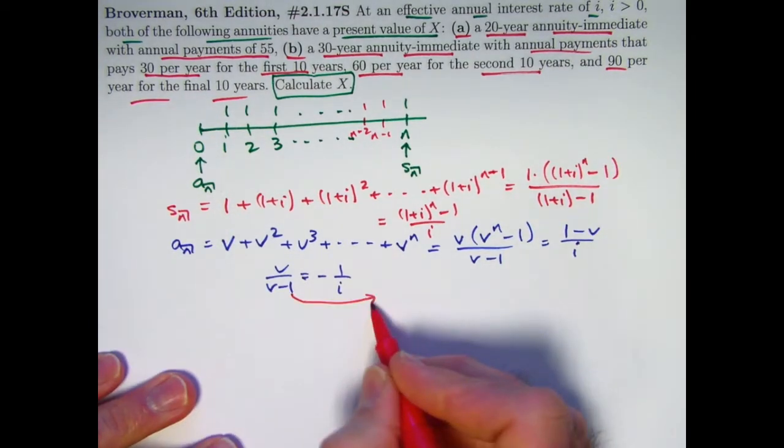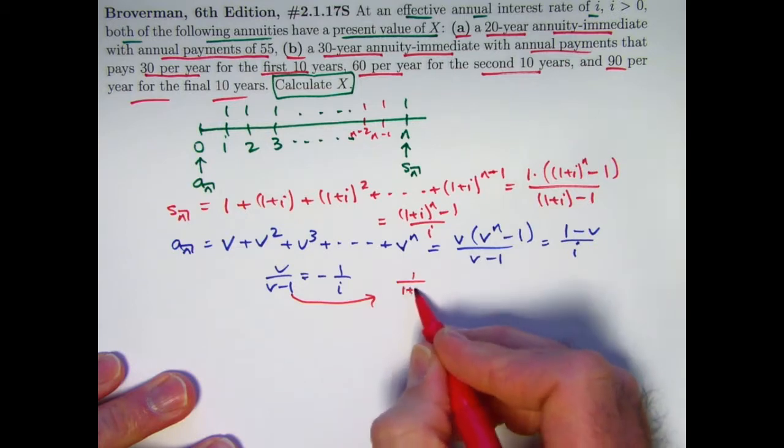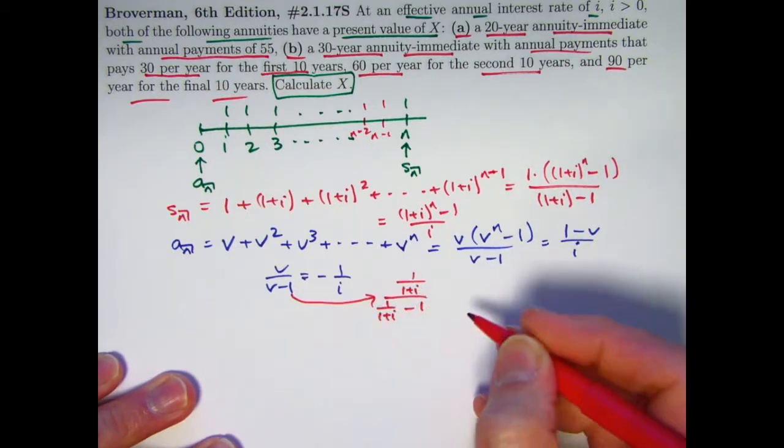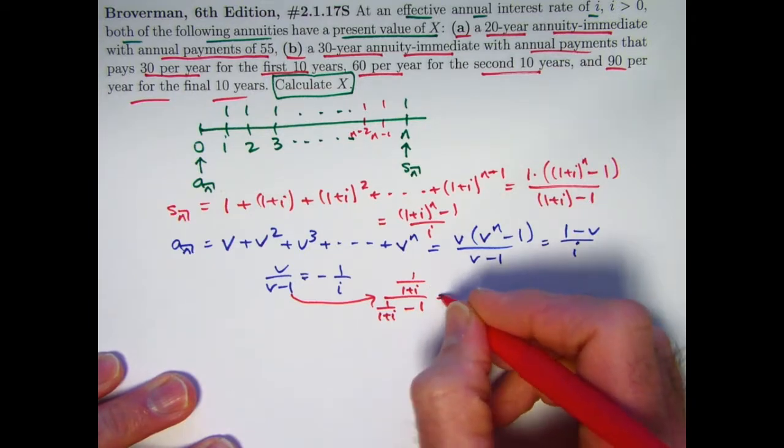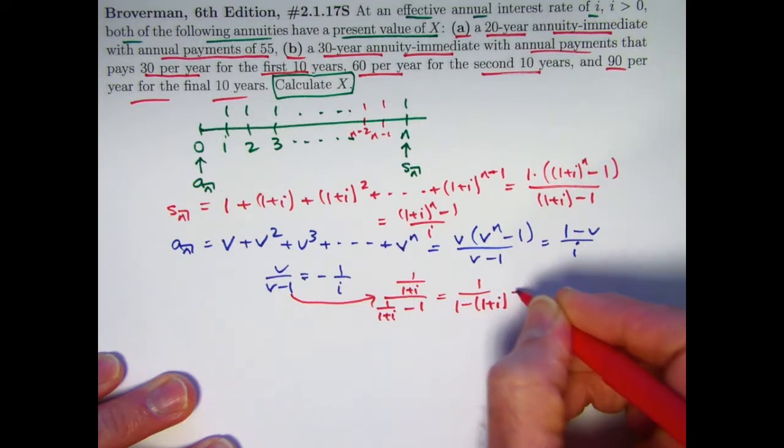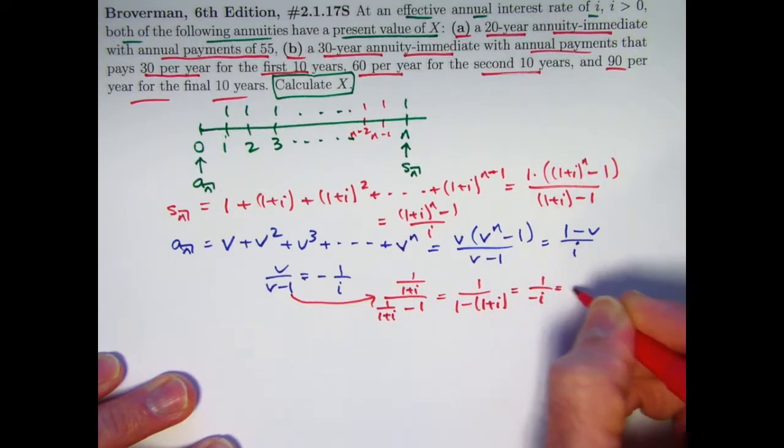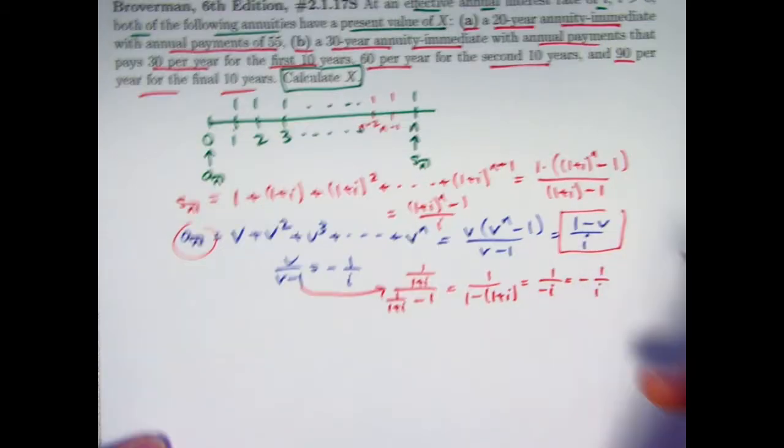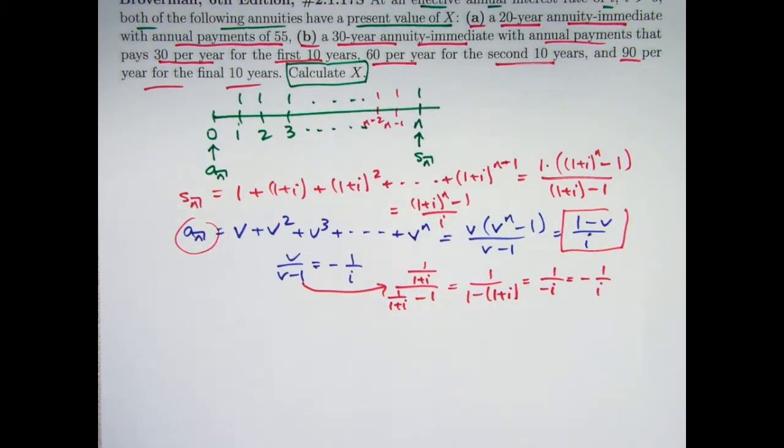To see why that's the case, we can replace v with 1 / (1 + i), like this. And simplify by multiplying the top and bottom by (1 + i). After cancellation, we get this. It equals -1 / i. Therefore, that's why this formula for A_N can be simplified to this. OK, and that's going to be another formula you're going to want to use a lot. Oops, there's a mistake there. It should be to the N power.